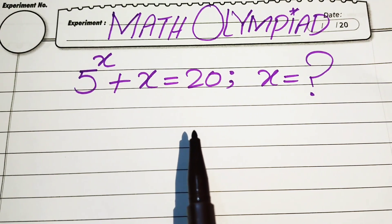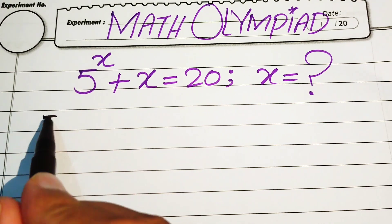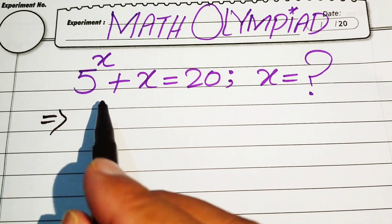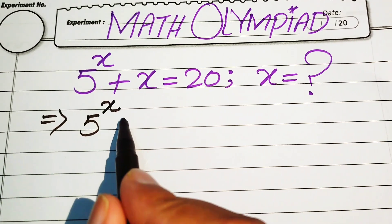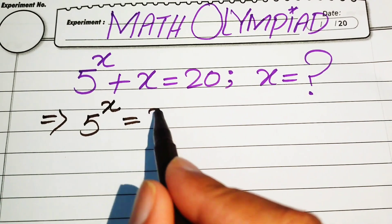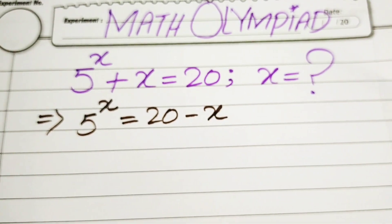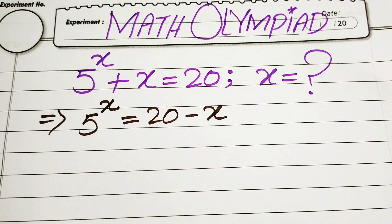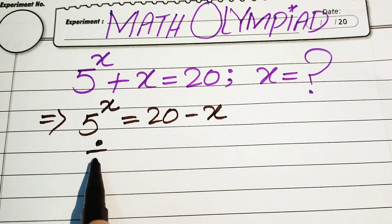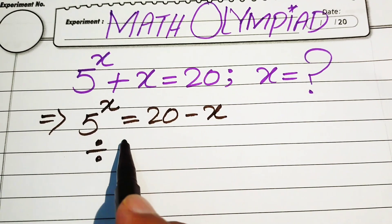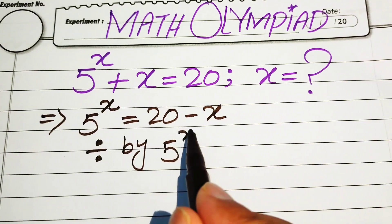The very first step we are going to do is rearrange the terms. We move the plus x to the right hand side, and it will be written as 5 to the power of x equals 20 minus x. Now in the next step we divide both sides by 5 to the power of x.